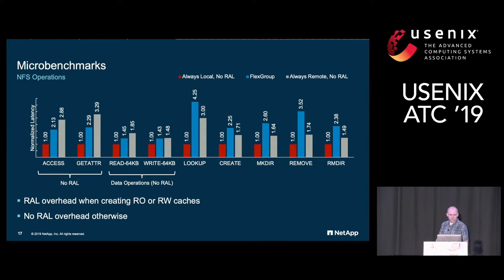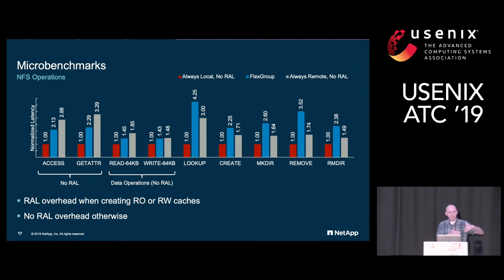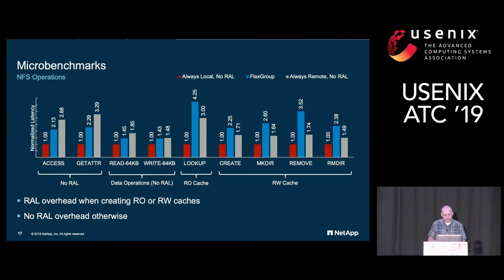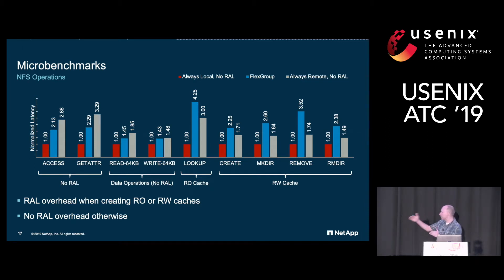Note that neither the local nor the remote configurations have a remote access layer, which helps us see what the overhead for the RAL is. The y-axis is normalized latency — lower is better. For operations without RAL, the Flex Groups latencies are exactly where you'd expect: right between local and remote, which makes sense because Flex Groups tries to distribute the data. On the other hand, for operations that use the RAL cache, Flex Groups does take more time — these are microbenchmarks designed to stress metadata and create more overhead. Interestingly, lookup, which only needs a read-only delegation, has lower overhead compared to the remote case than the other operations, which makes sense.